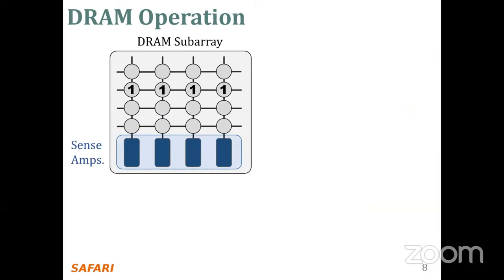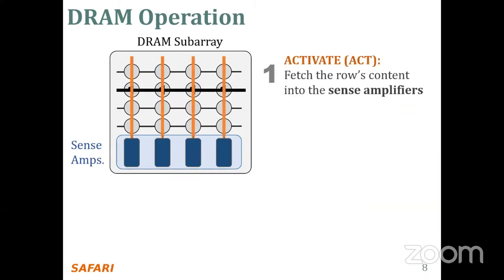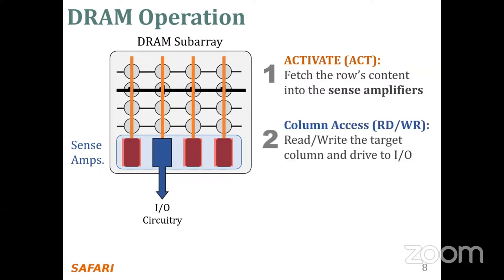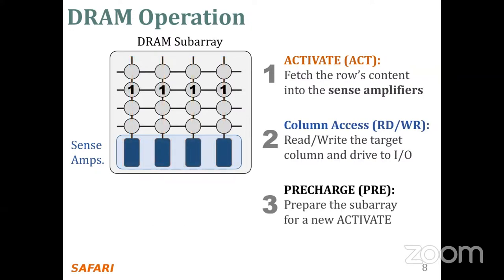Let's take a look at the major DRAM operations. Data is internally accessed in a row granularity. To access data, the memory controller first needs to activate the row that contains the data and fetch the row's content into sense amplifiers. Then column accesses are served from the sense amplifiers using read and write commands. Finally, the subarray needs to be pre-charged to get ready for the next row activation.